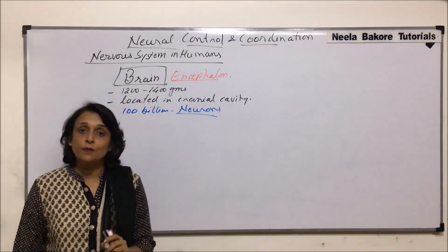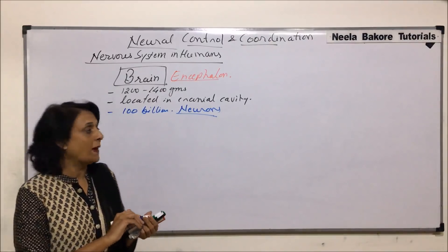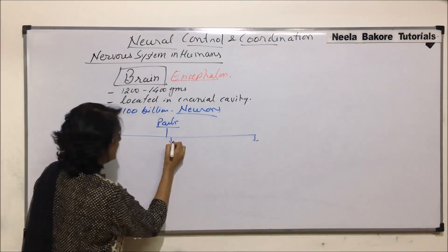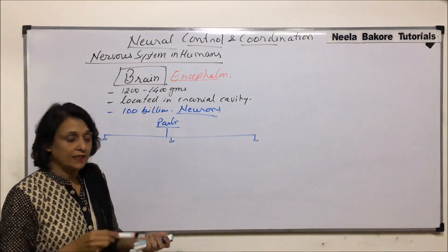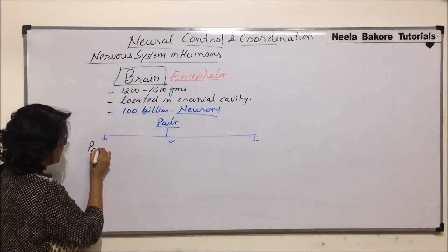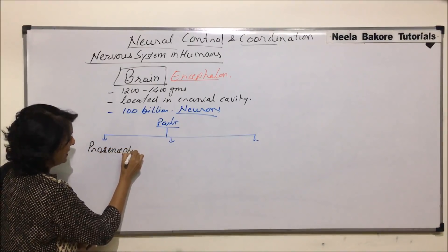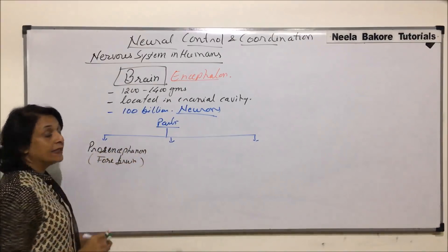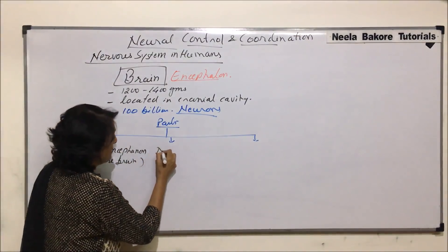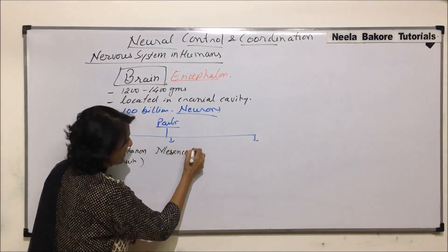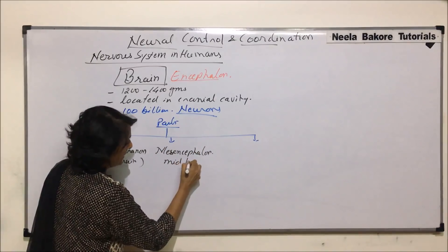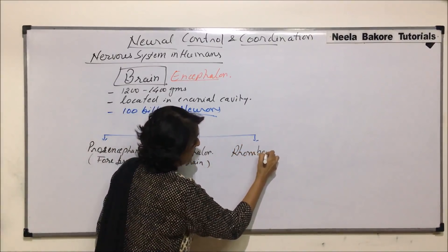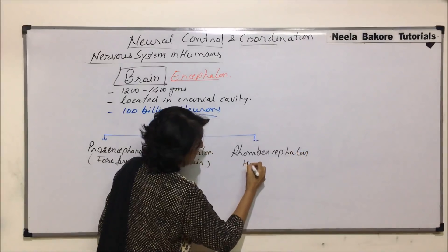If we talk about the parts of the brain, the brain is divided into three parts. These are forebrain, midbrain, and hindbrain. In technical terms, the forebrain is known as prosencephalon, the midbrain is known as mesencephalon, and the hindbrain is known as rhombencephalon.